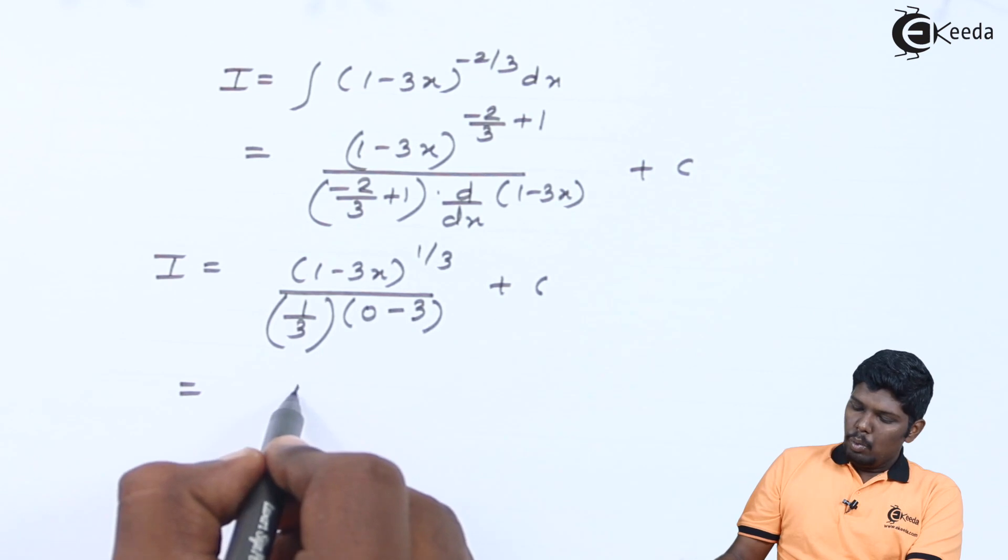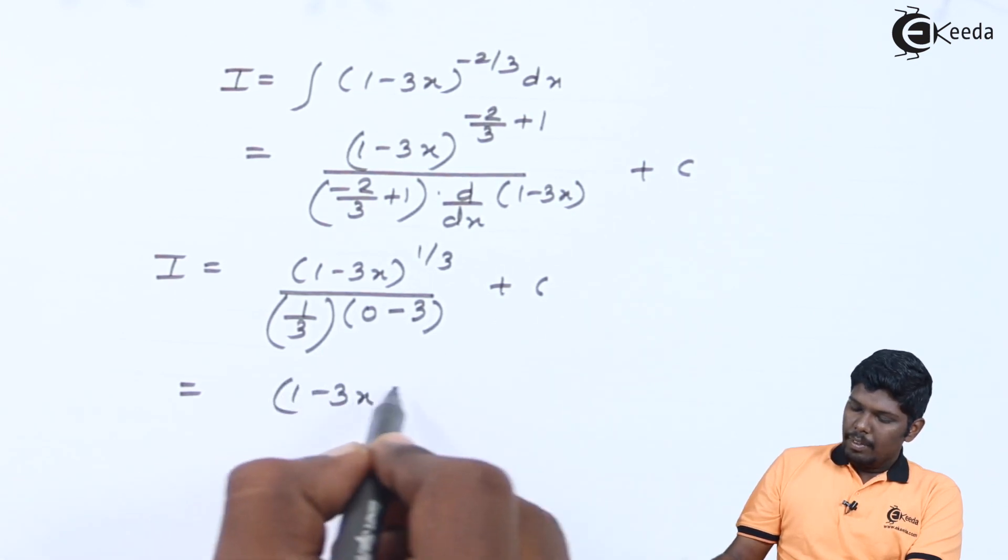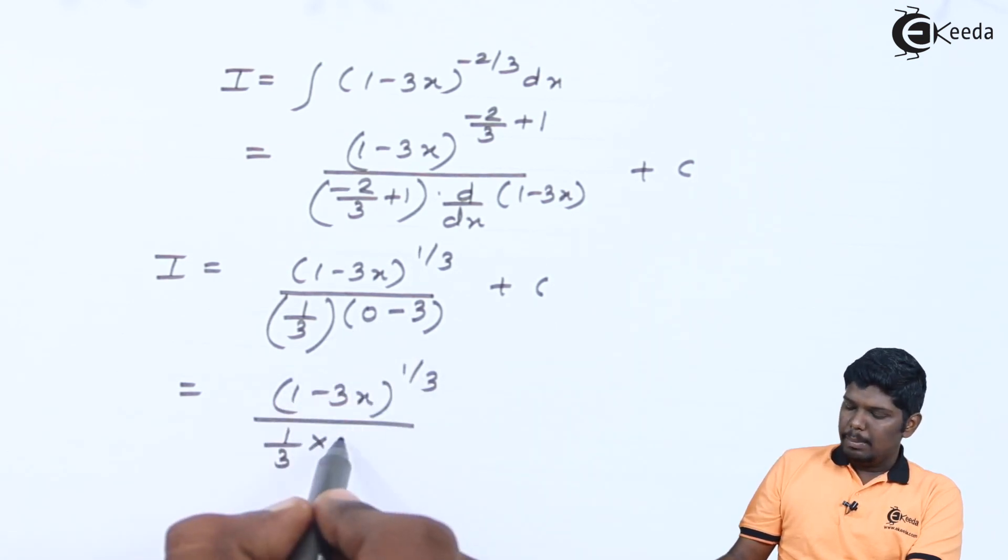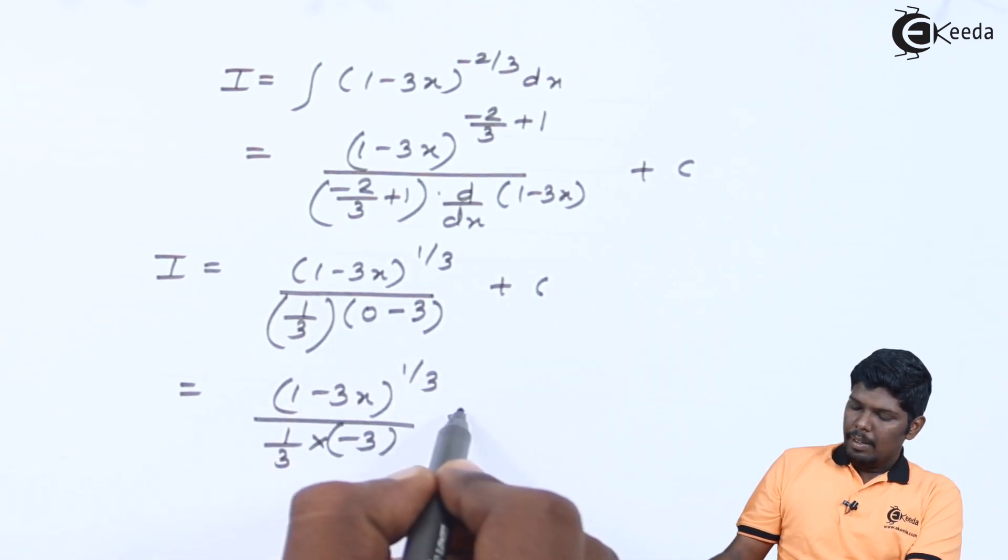That will give you (1 minus 3x) the whole raise to 1 by 3, divided by 1 by 3 into 0 minus 3 is minus 3, plus c.